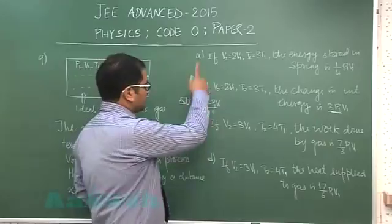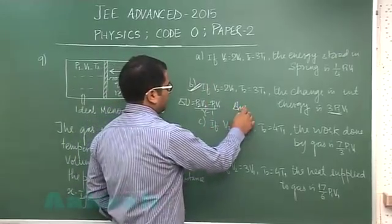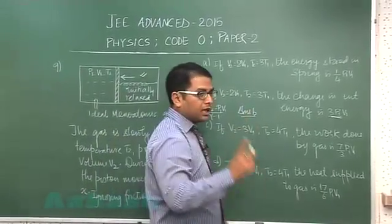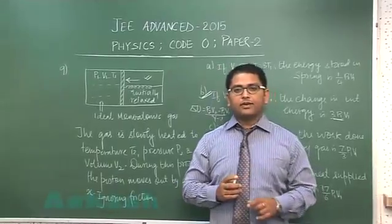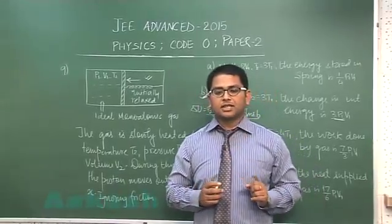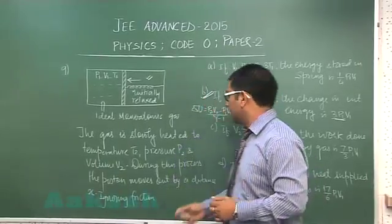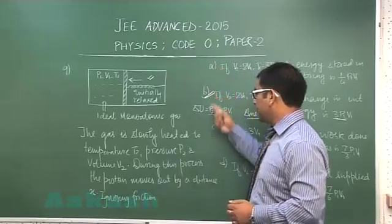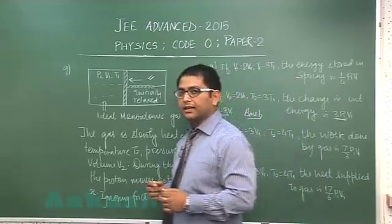So this particular question would have answer B. However, if we make a small modification on the question from our own part, then option number A, B, and C all would be correct, and we would be in a position to calculate the work done as well.